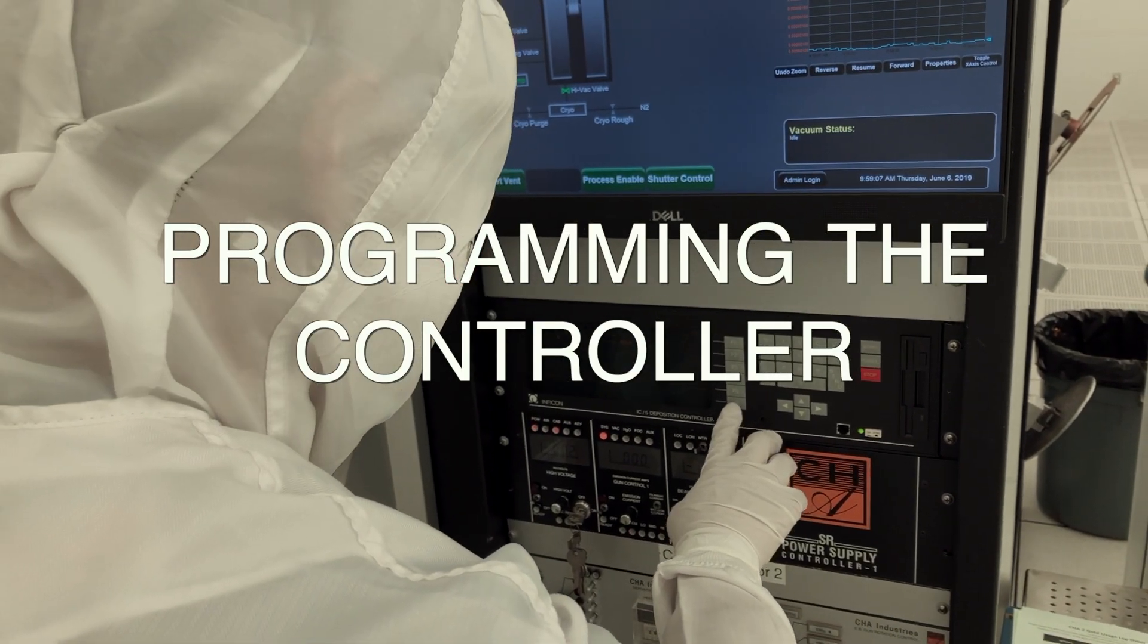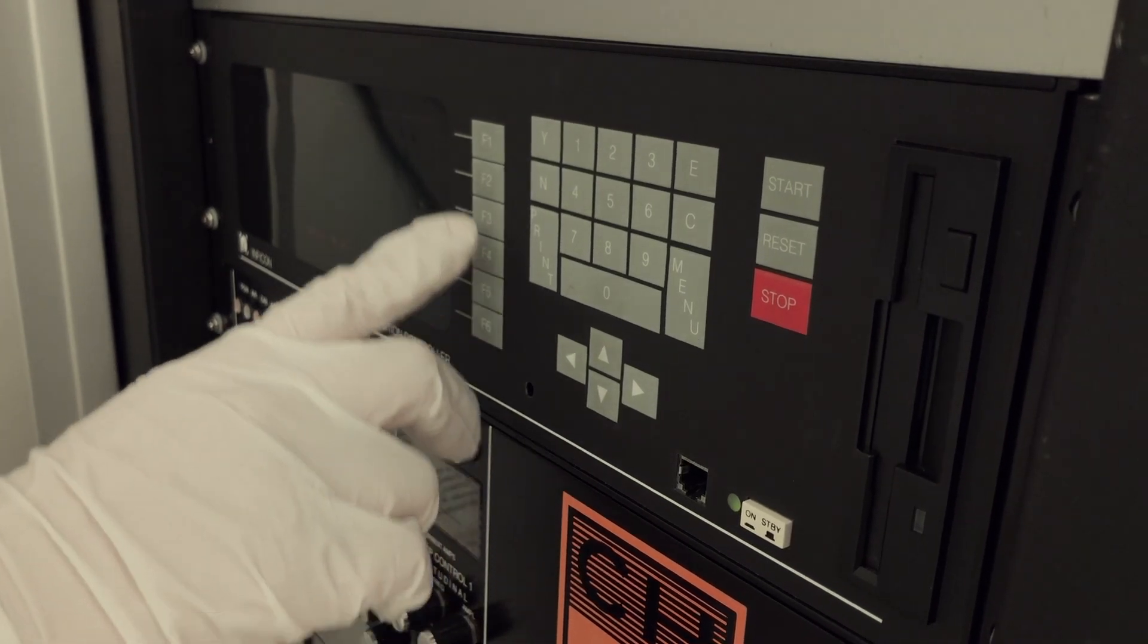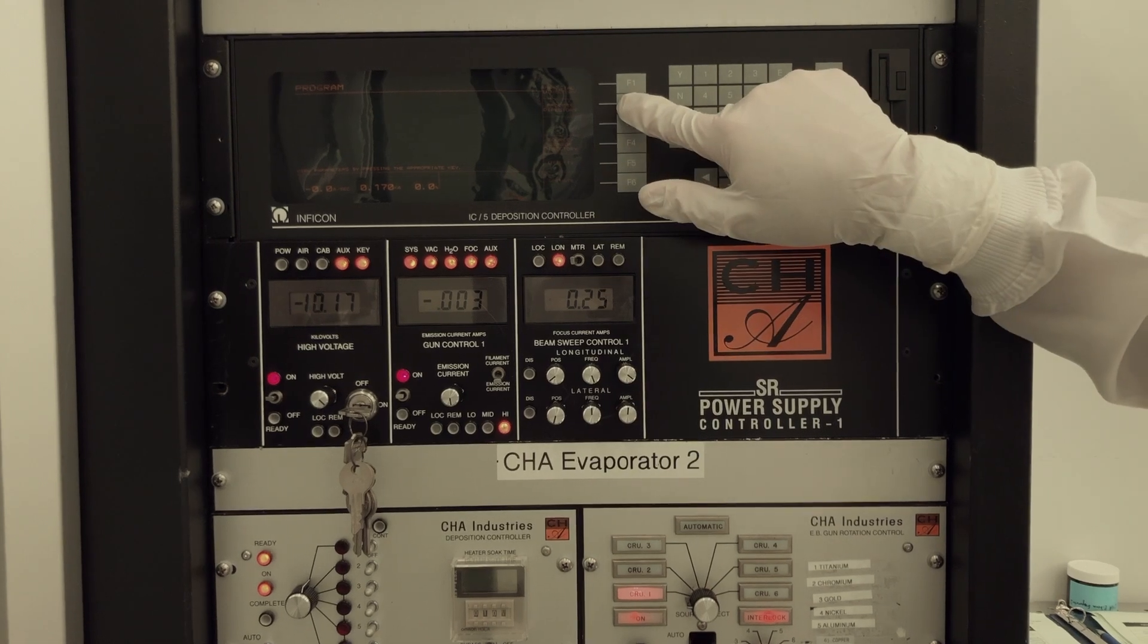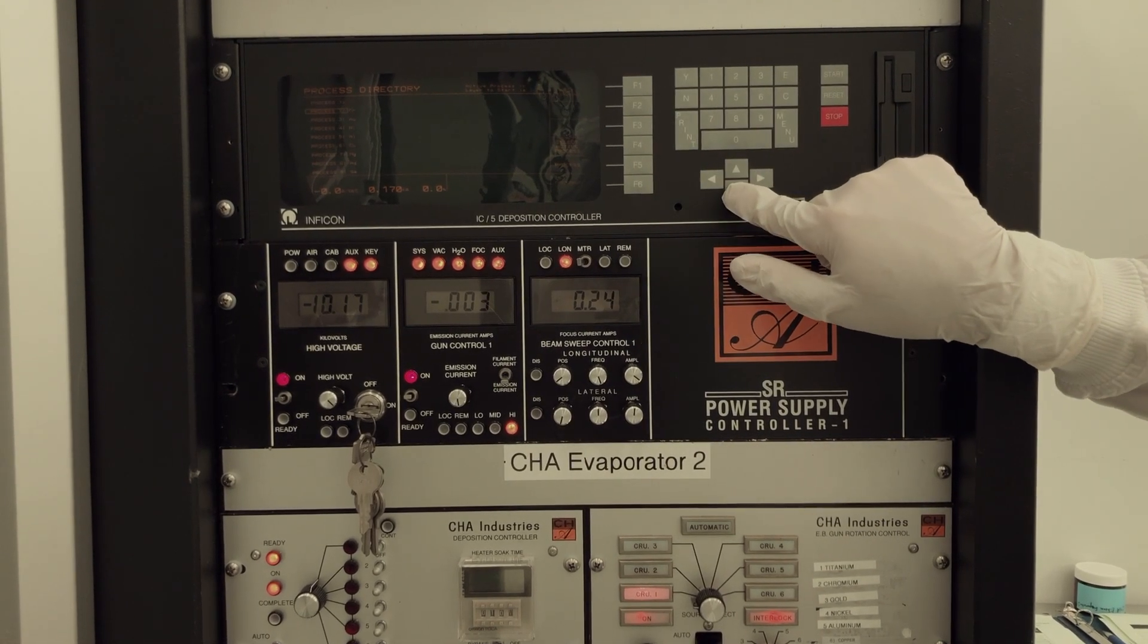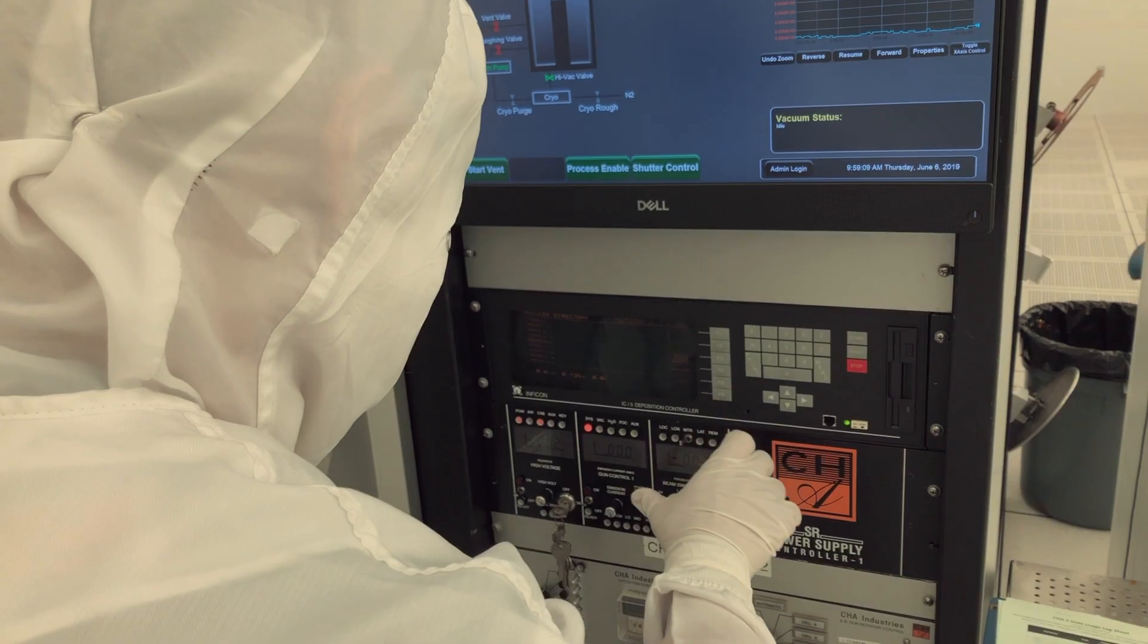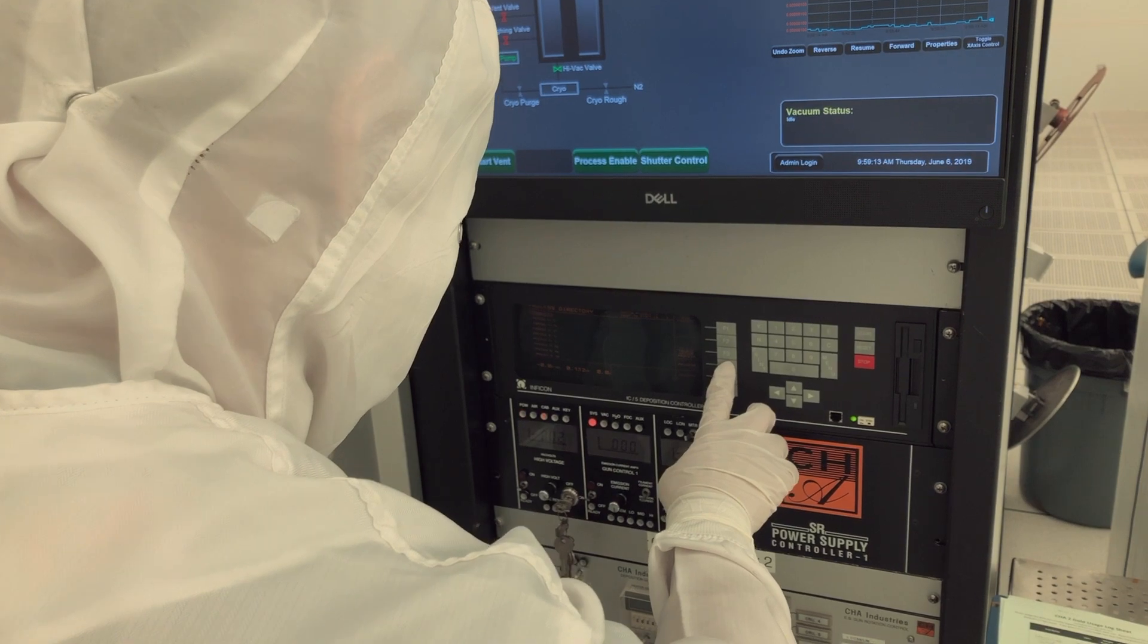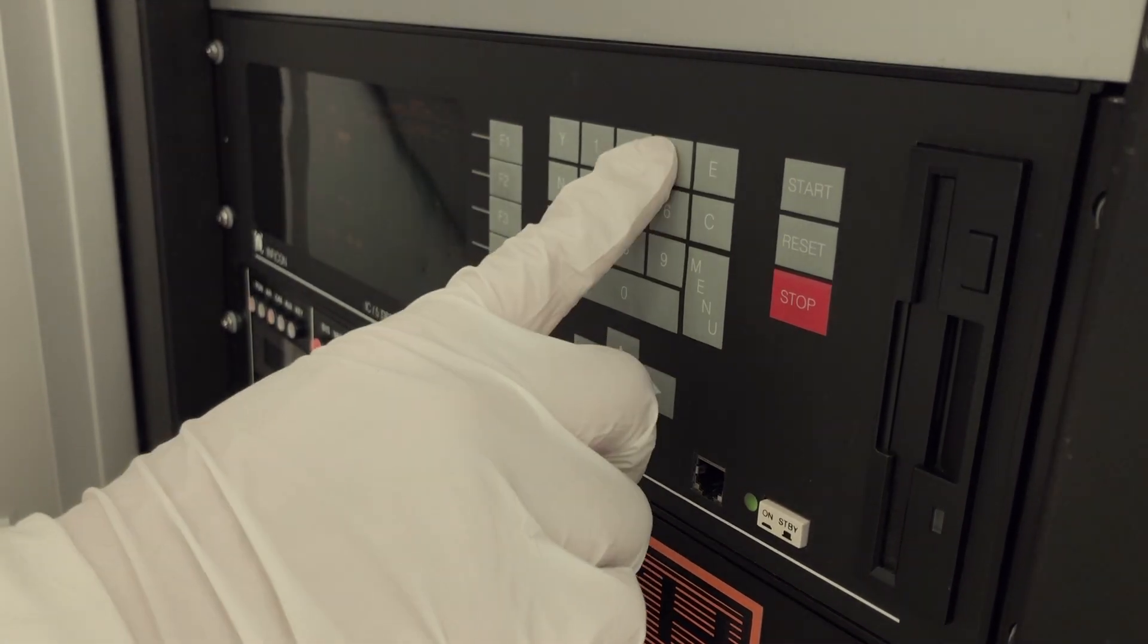To begin programming the deposition controller, press F6 for program on the keypad. Then press F2 for process directory. The controller will display a list of materials. You will need to set up each material that you are going to use during your process run. Use the arrow keys on the keypad to highlight the material you want to set up. Press F5 for process to display the settings for the material.